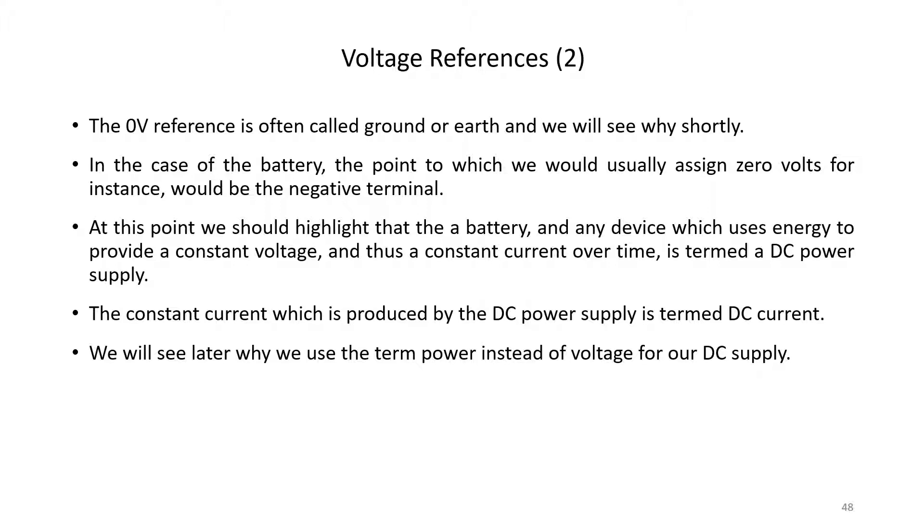We mentioned previously that the battery provides a constant voltage, and because it provides a constant voltage it's also able to provide a constant current over time. Any active device that can do this is termed a DC power supply. The constant current that is produced by a DC power supply is termed DC current.